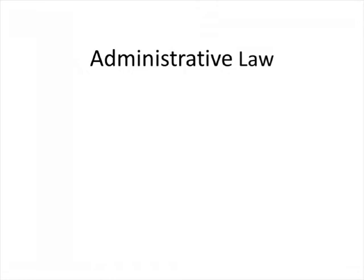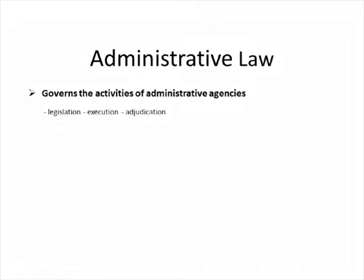Administrative law is the body of law that governs the activities of administrative agencies of the government. Administrative agencies can be broadly classified into three: the legislative, the executive, and the judiciary. All administrative activities can be covered under these three main heads, comprising legislation, execution, and adjudication.